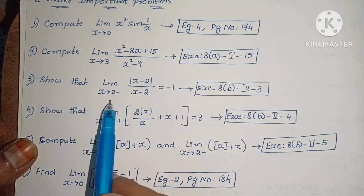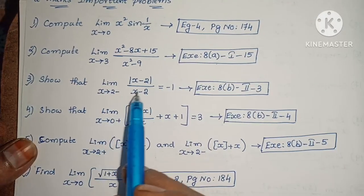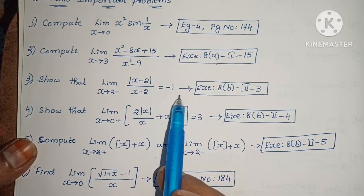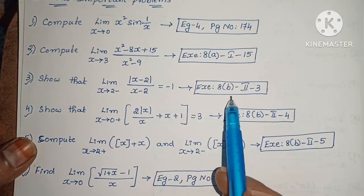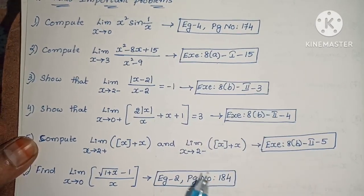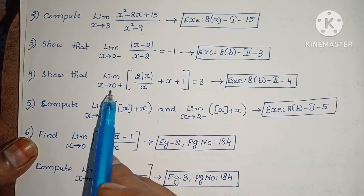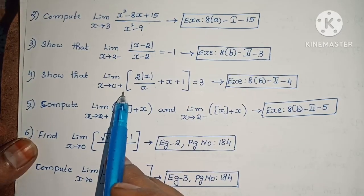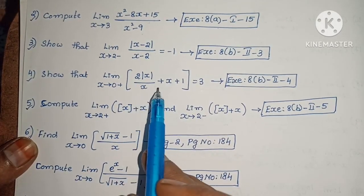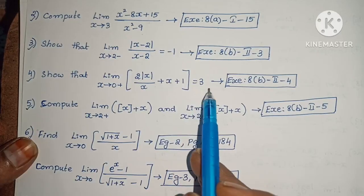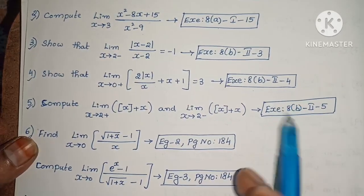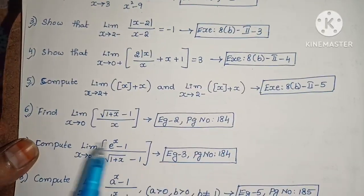Next: Show that limit extends to 2 minus of modulus of x minus 2 by x minus 2 equals minus 1. Exercise 8, second roman law, 13th one. Next: Show that limit extends to 0 plus of 2 into modulus of x divided by x plus x plus 1 equals 3. Exercise 8, second roman law, 4th one.